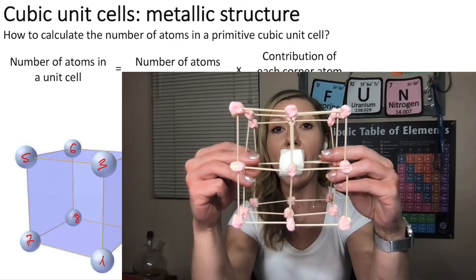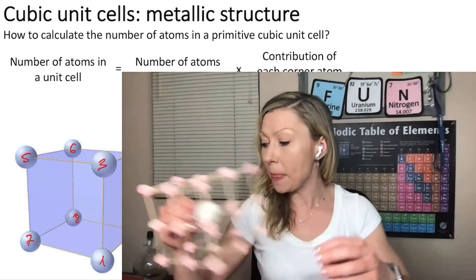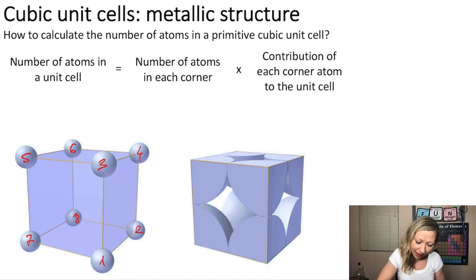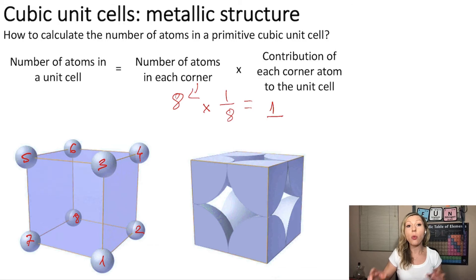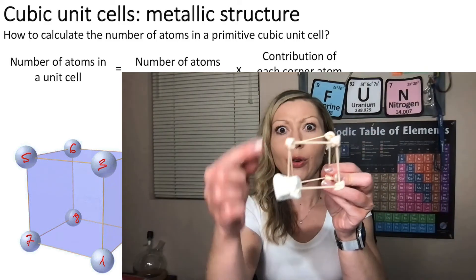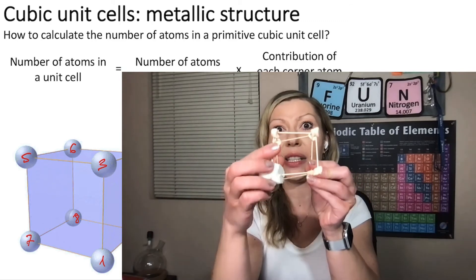This means that I'm going to have a contribution of one eighth of an atom from each corner. So I can calculate the number of atoms within a unit cell: I have eight corners, and I multiply that by the contribution of one eighth. So if I do this calculation, I get one. When I have a primitive cubic unit cell with spheres in the corners, I'm going to have a total of one atom inside this unit cell.